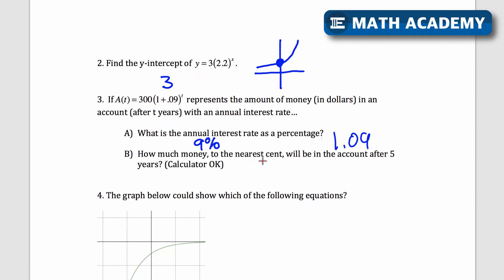B, how much money to the nearest cent will be in the account after five years? So I can use a calculator on this one. Well, that means that they said that after t years, so t represents years. So I just plug in 5 for t. And let's use the calculator to see what we get. 300 times 1.09 to the power of 5, I get 461.5, and that will round up to 5.9. So that would be $461.59.